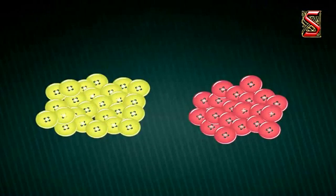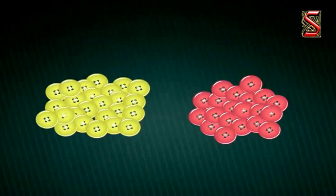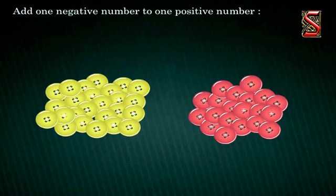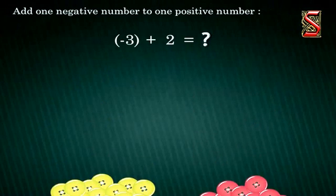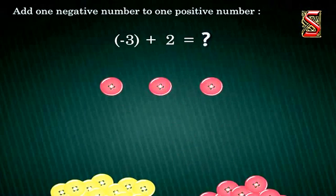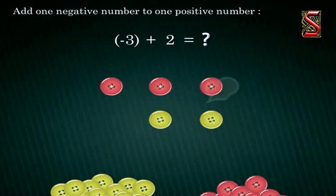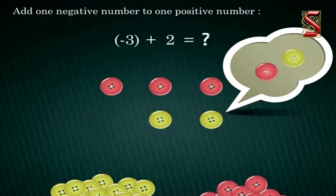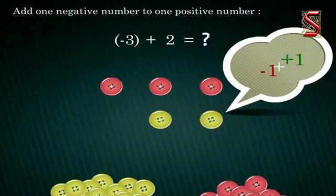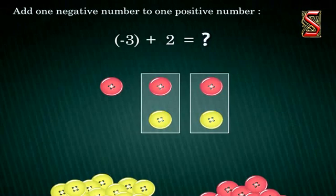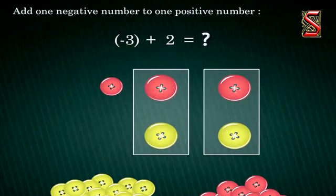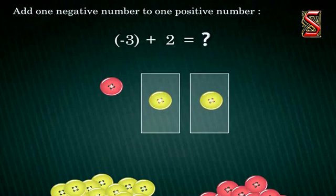These buttons are really cute looking. Let us do some more addition problems with them. Now what if we want to add one negative number to one positive number? Let us try it together with this example. Add negative 3 with positive 2. First, we have to take three red buttons and two green buttons. As we know that a pair of red button and green button represents zero. In other words, negative 1 plus positive 1 is equal to zero. So, the first step is to pair red and green buttons. We can see that there are two pairs of red and green buttons which will get cancelled and give us zero.